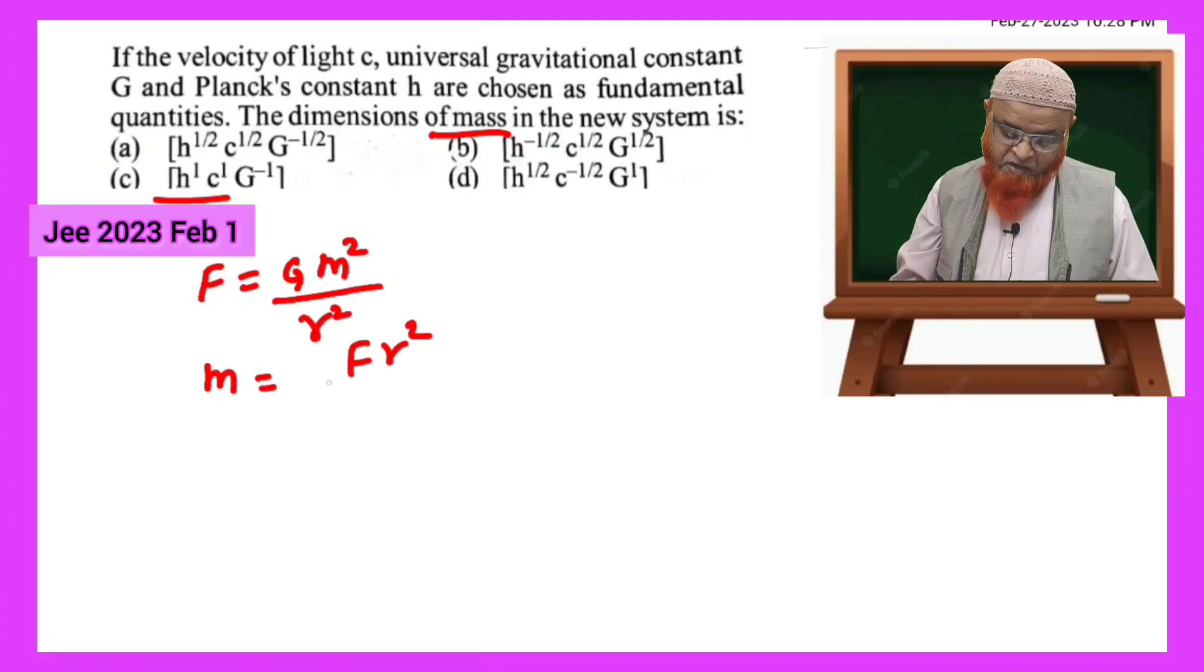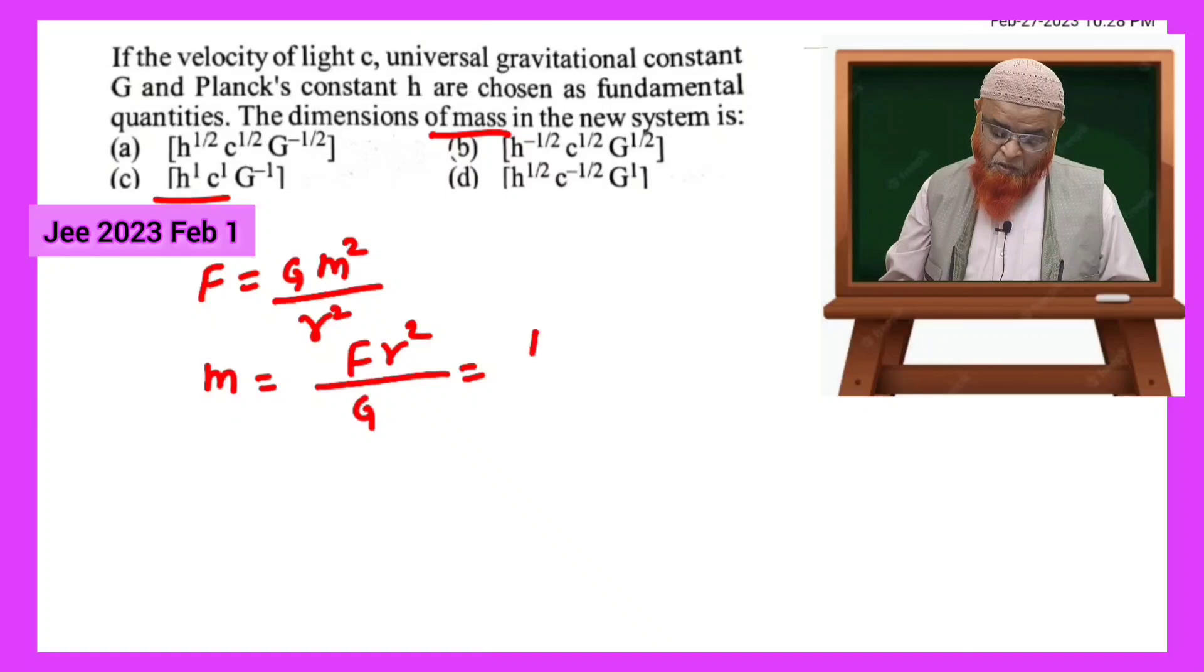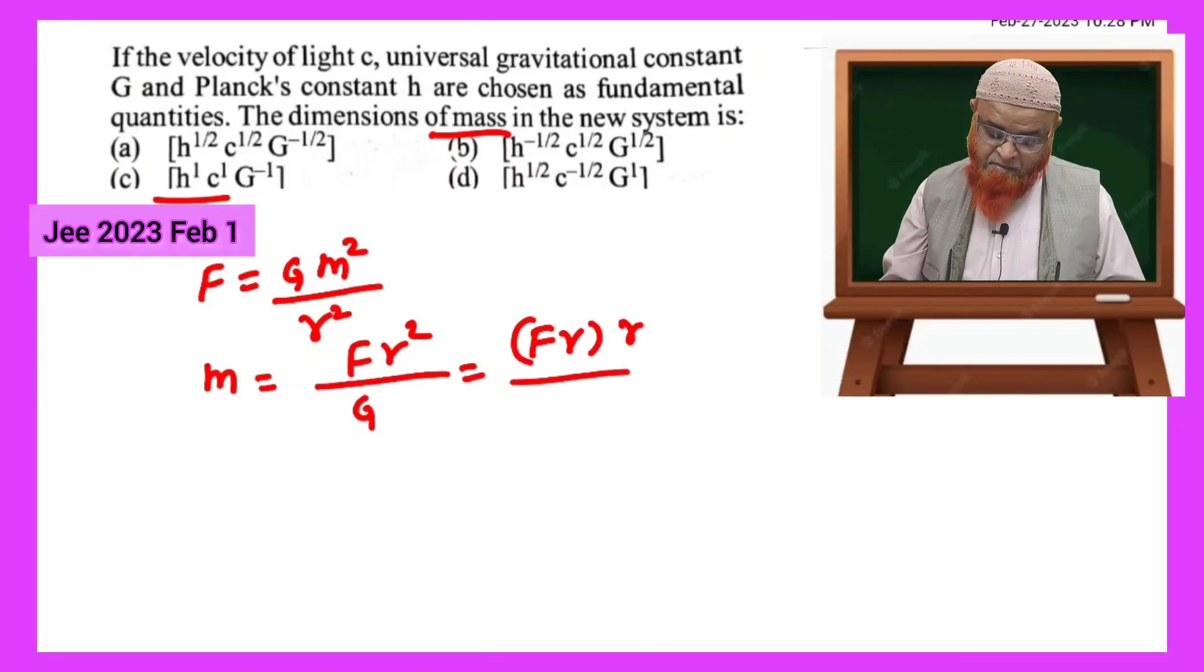Mass is equal to F into r squared by G. Now here you can consider F into r into r by G.